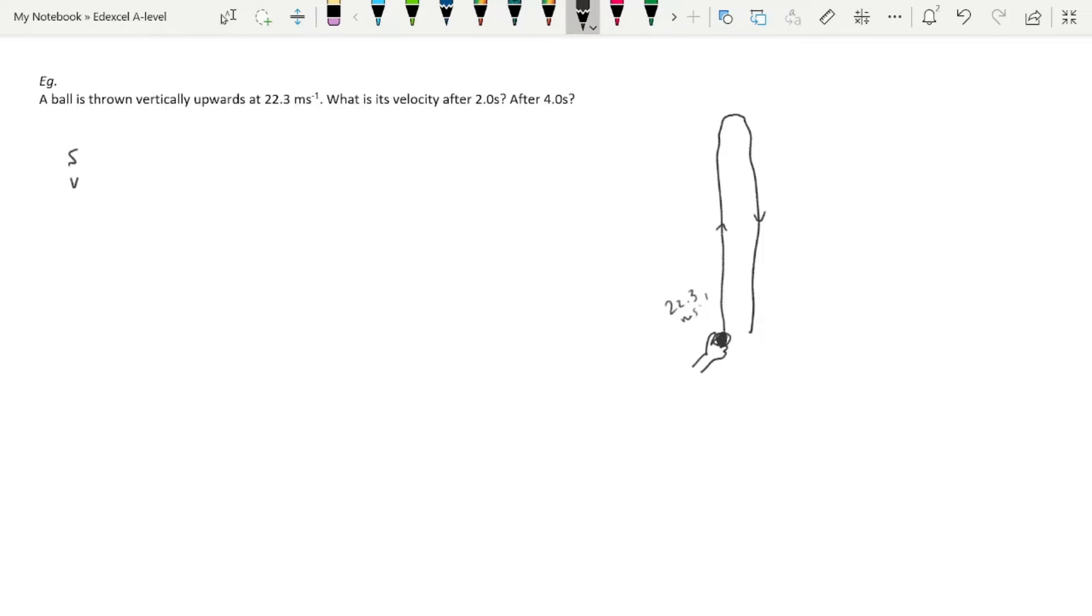Let's write out our SUVAT here. We are not interested in s. Our u is minus 22.3, because as I just said, if it's a velocity upwards, it's got to be negative since acceleration downwards is positive.